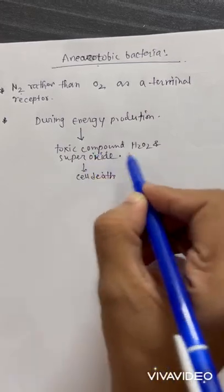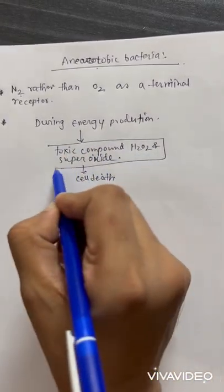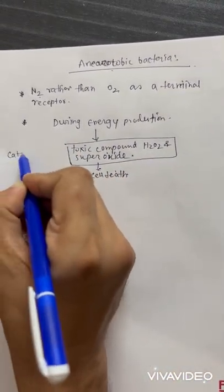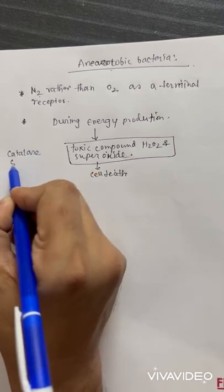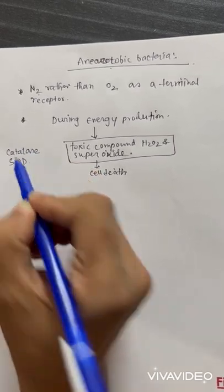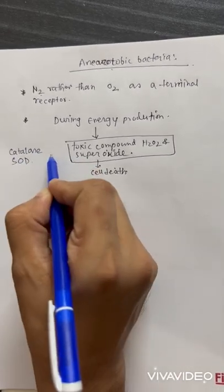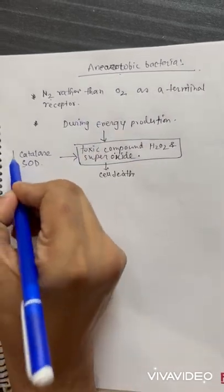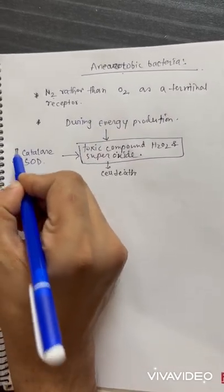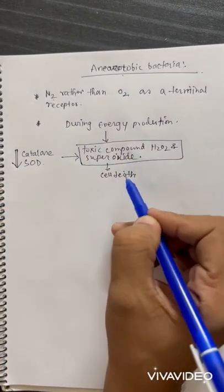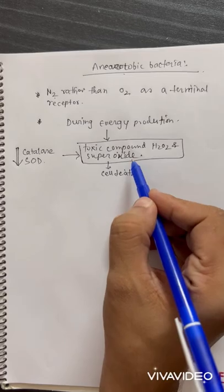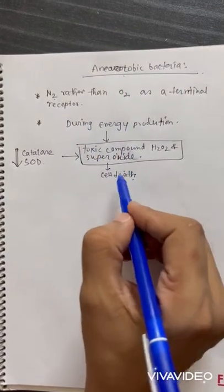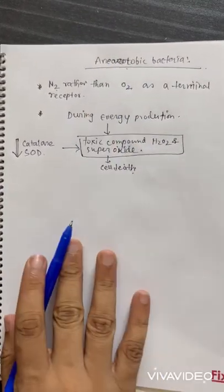This toxic compound is normally eliminated by catalase and superoxide dismutase, which catalyze and remove these toxic compounds. But in anaerobic bacteria, there is a reduced amount of catalase and superoxide dismutase, so the toxic compound cannot be eliminated and it causes cell death in the presence of oxygen.